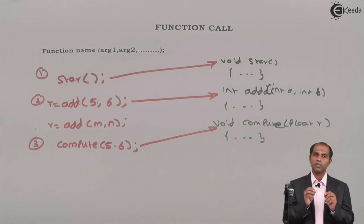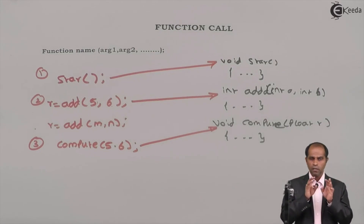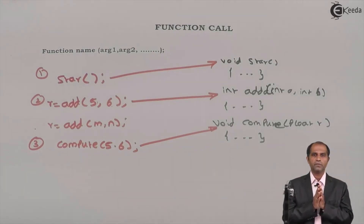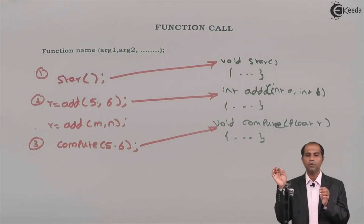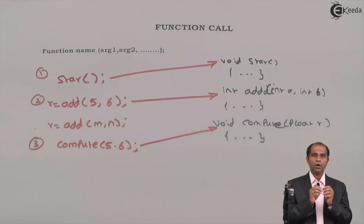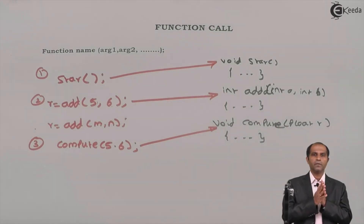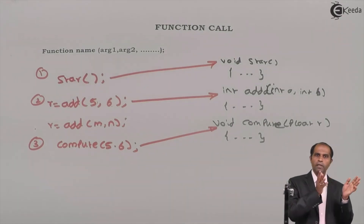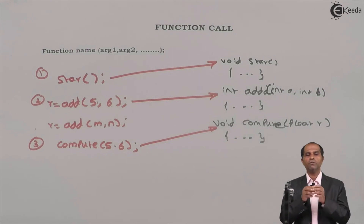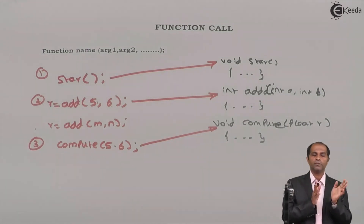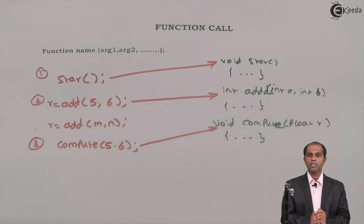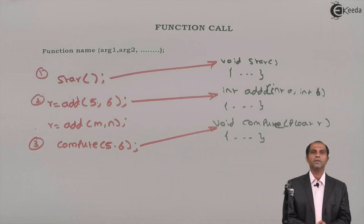To summarize: a function call is an instruction which makes the definition active or invoked. The function call should include arguments if they are accepted, and arguments can be constants, variables, or even expressions. There should be a variable on the left-hand side of the function call only if the function returns a value. If the function does not return any value, there should not be any left-hand side variable. That covers the concepts of a function call.